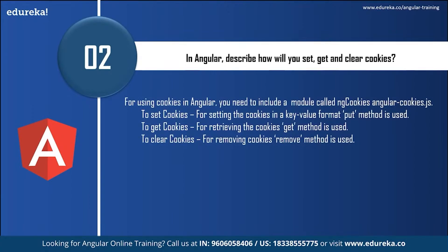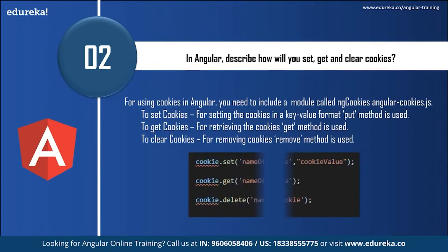Next question: in Angular, describe how you will set, GET, and CLEAR cookies. For using cookies in Angular, you need to include an Angular module called ngCookies (angularCookies.js). For setting cookies in a key-value format, PUT is the method used. For retrieving cookies, GET method is used. For removing cookies, REMOVE method is used. You can follow the code procedure shown here to proceed.